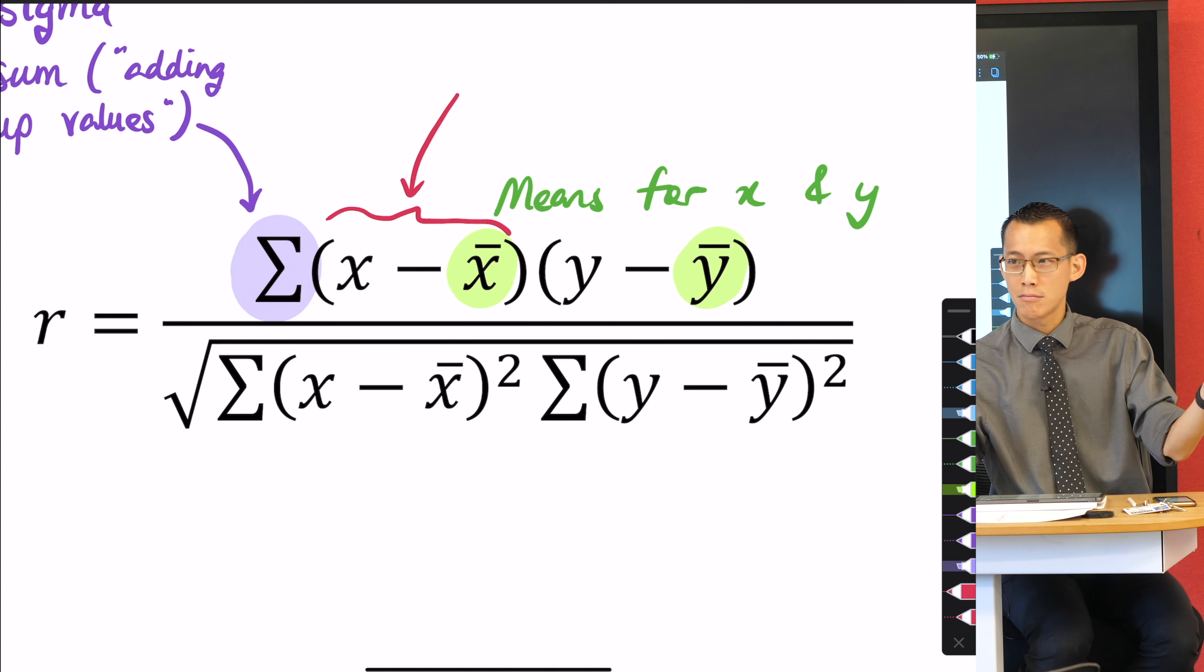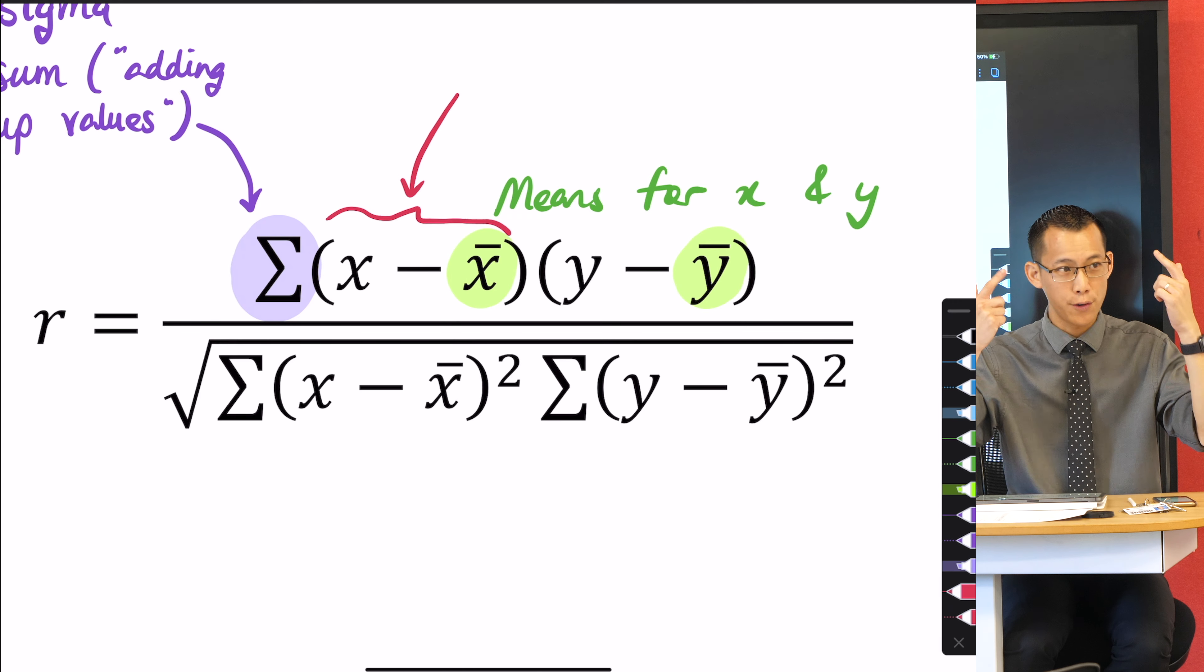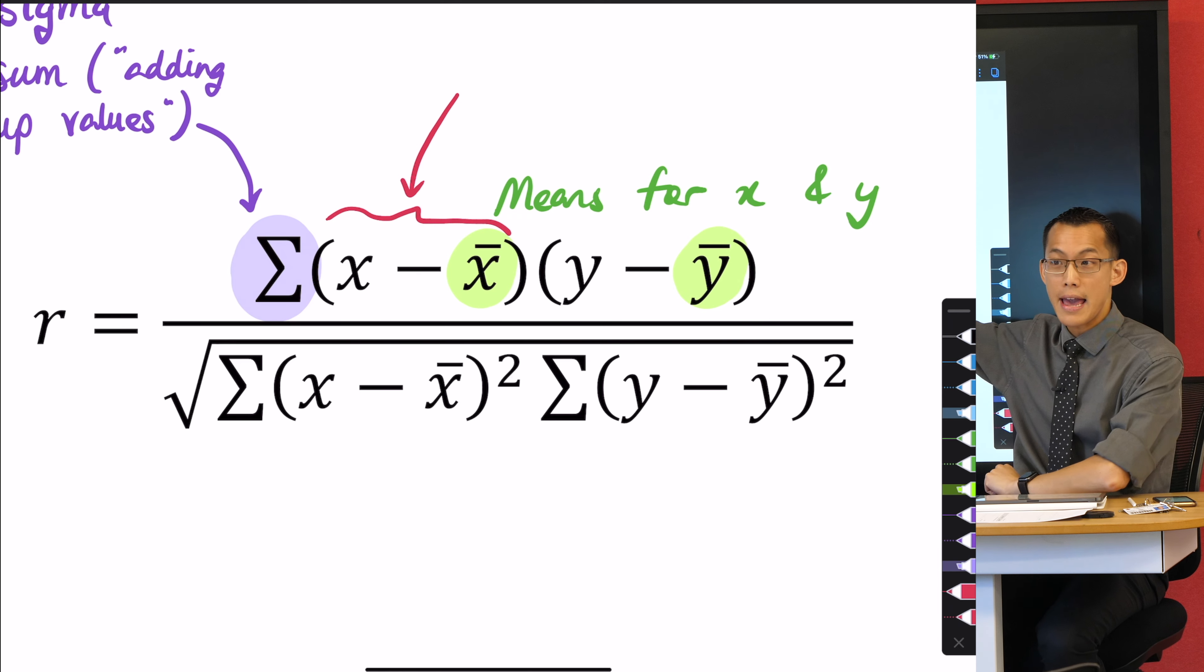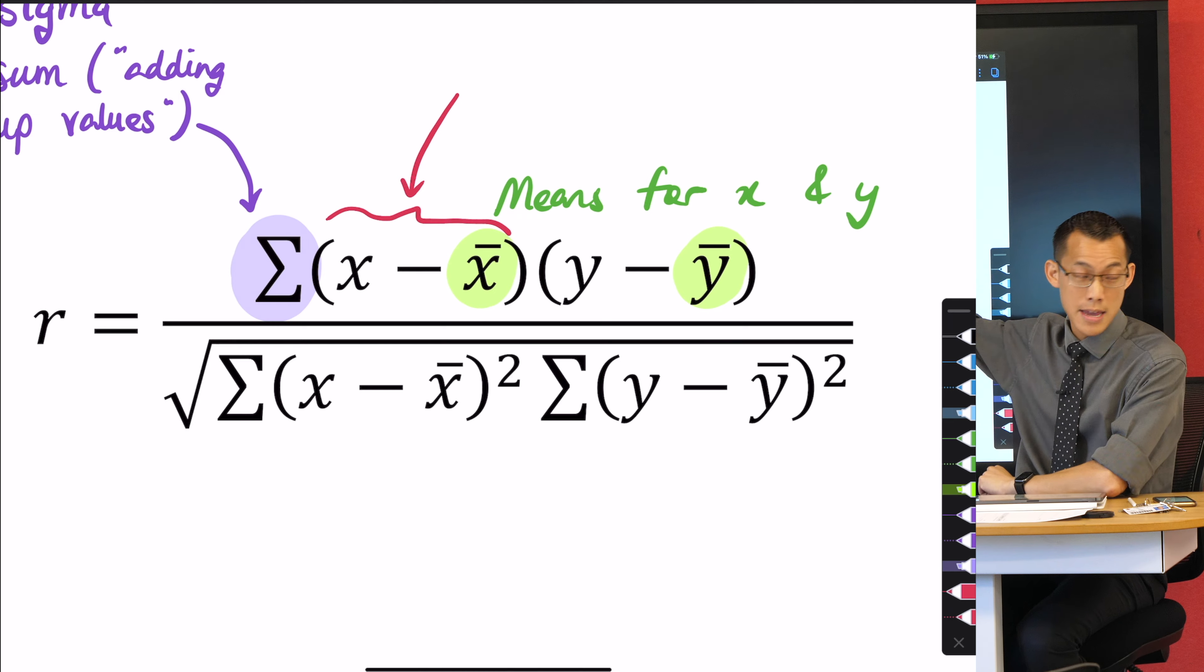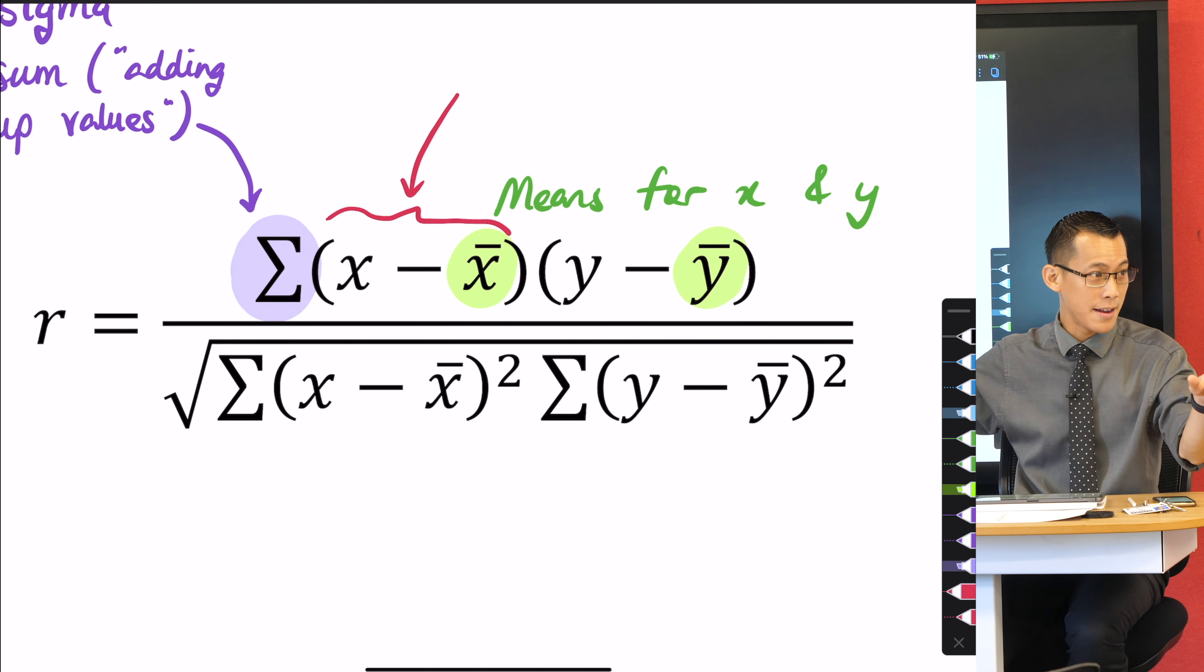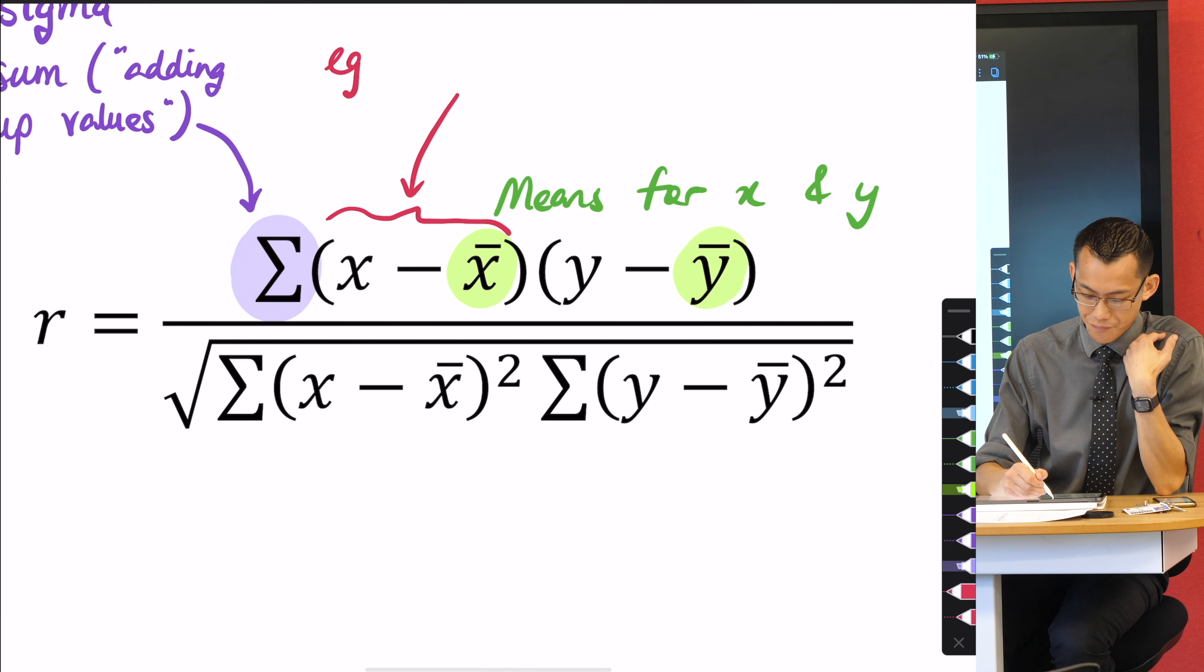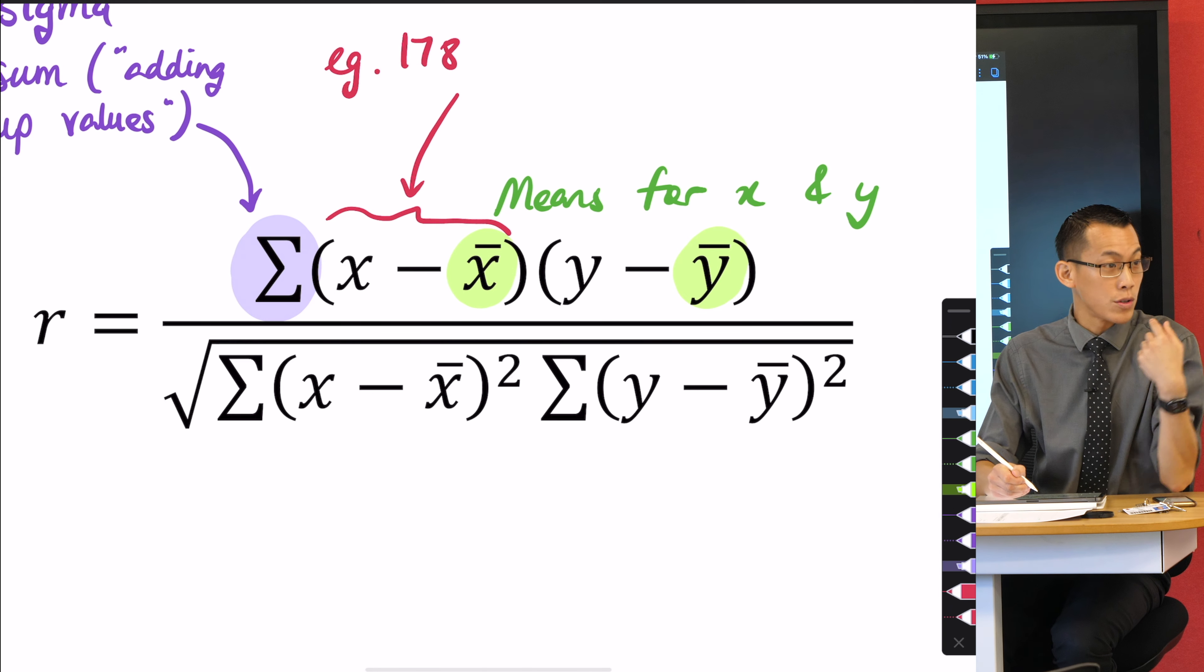I can jot this down as an example. If I said 178, which is my height, take away 170, which I'm just putting out there as the mean height, that gives me eight. What does that actually mean for me in relation to this class?